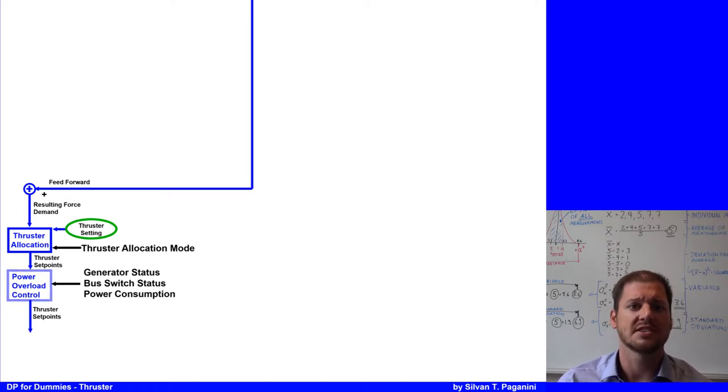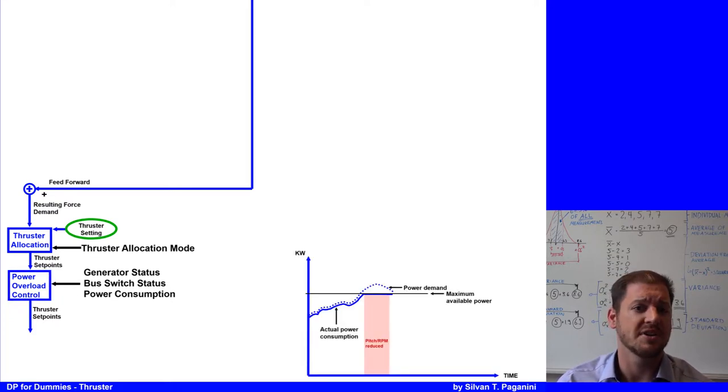All set points from the thruster allocations are then forwarded to the power overload control, where it checks if there is enough power available, because if not, the power overload control will reduce the pitch and RPM demand. The reduction value is shared between the connected thrusters in such a way that the effect on the position and heading control is minimized. Very important to know, this function acts in addition to the vessel's own power management system, PMS. This power overload control is limited and will only limit thruster commands to avoid a stable plant becoming overloaded.